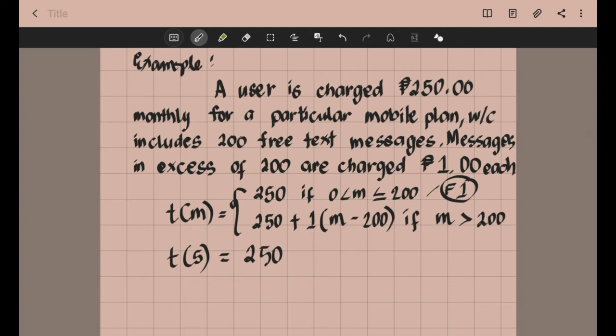Now, what if the user sent more than 200 text messages? This means they exceeded the 200 free text messages. Let's say they sent 230 messages. So T of 230. Which formula will we use? Is it formula 1 or formula 2? Since 230 is greater than 200, we will use formula number 2.